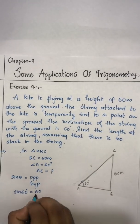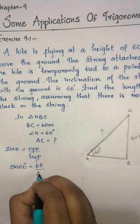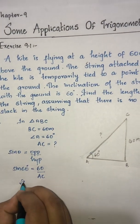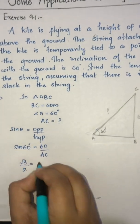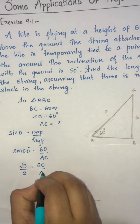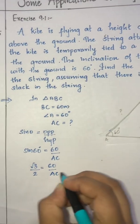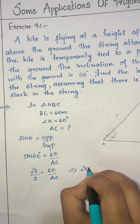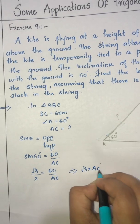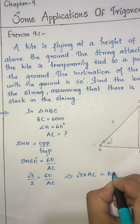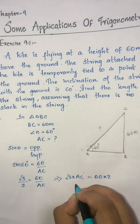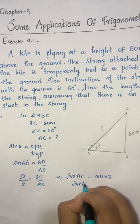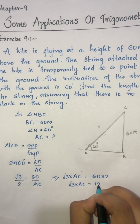60 meters divided by the hypotenuse AC. Sin 60 is root 3 by 2. So root 3 by 2 is equal to 60 by AC. Therefore, root 3 multiplied by AC is equal to 60 multiplied by 2, which gives root 3 times AC equals 120.